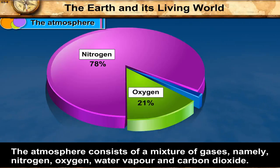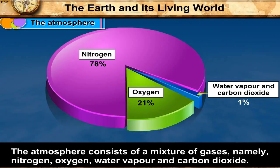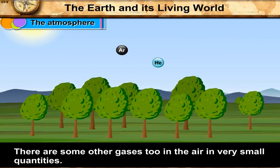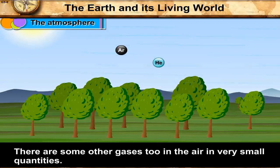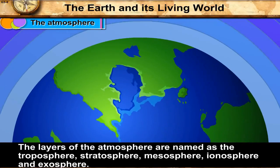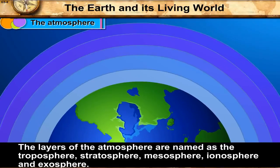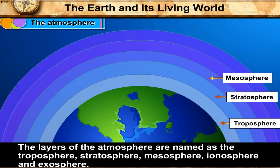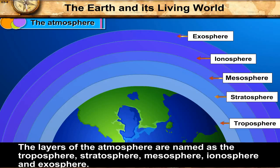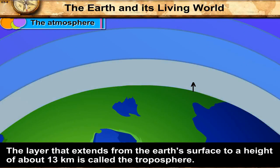The atmosphere consists of a mixture of gases, namely nitrogen, oxygen, water vapor, and carbon dioxide. There are some other gases too in the air in very small quantities. The layers of the atmosphere are named as the troposphere, stratosphere, mesosphere, ionosphere, and exosphere.